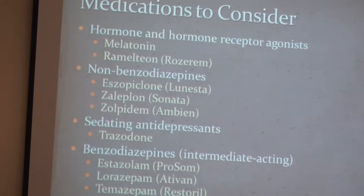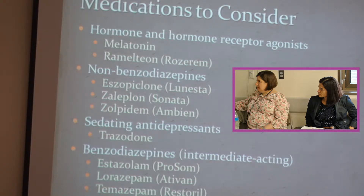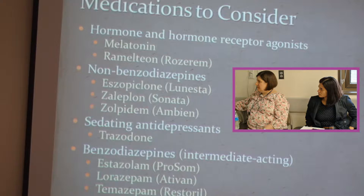Zolpidem — Ambien — which we usually have here at the VA, is one of the non-benzodiazepines we use for sleep. It's a GABA agonist with a pretty short half-life — the regular zolpidem is about one and a half to two and a half hours. There is a long-acting formulation, but the regular one is really only going to help with initiation of sleep. It's known to cause headaches, dizziness, and can lead to falls.